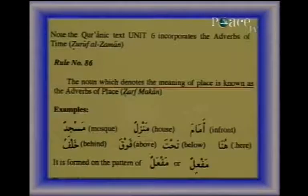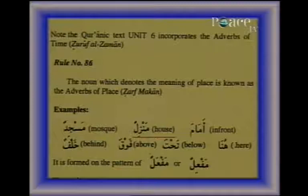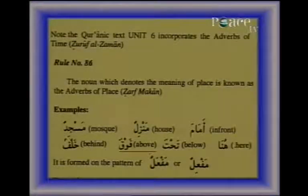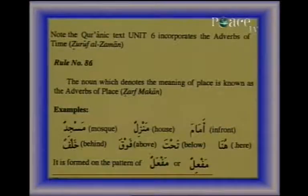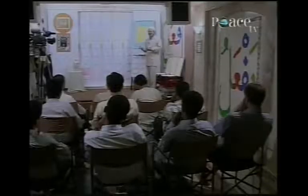The noun which denotes the meaning of place is known as the adverb of place, Zarf Makan. Examples: Masjid (mosque), Manzil (house), Amam (in front), Khalf (behind), Fawq (above), Tah (below), Huna (here). It is formed on the pattern of maf'al or maf'il. For example: Ma'abad (place of worship, temple), Majlis (council, meeting, seat).